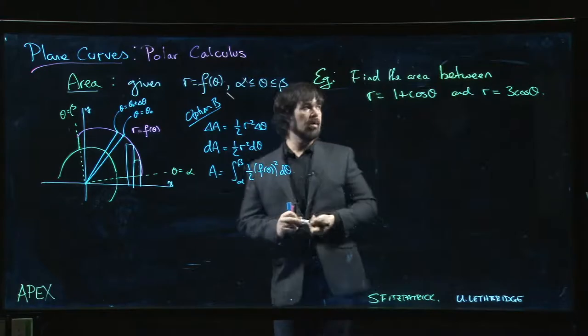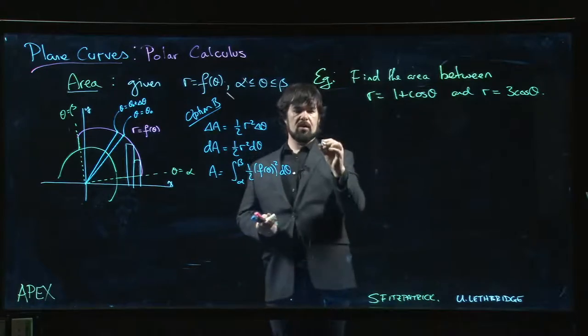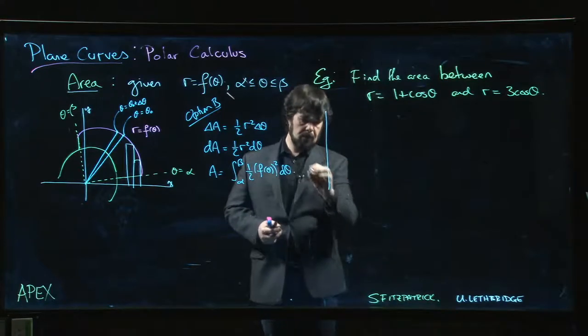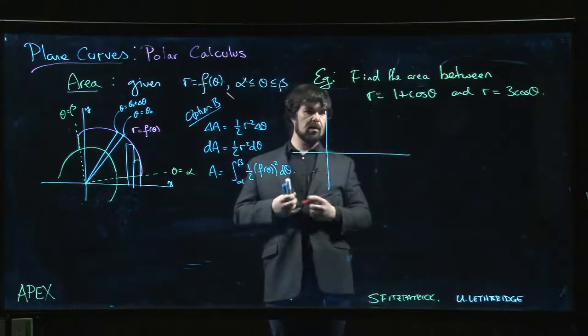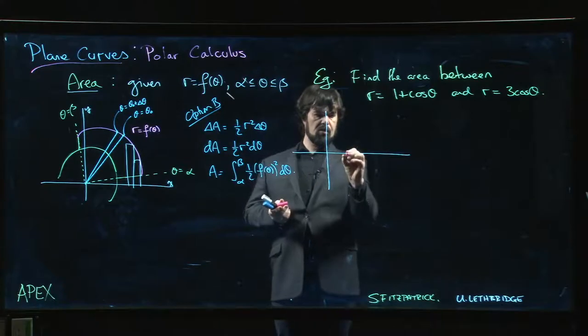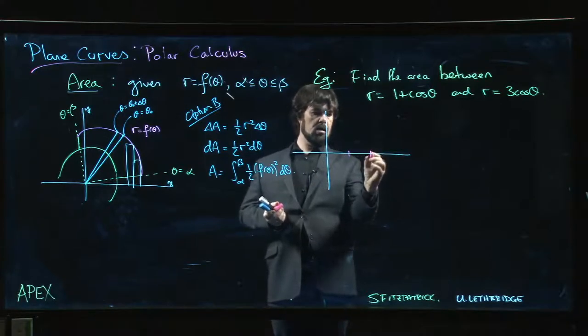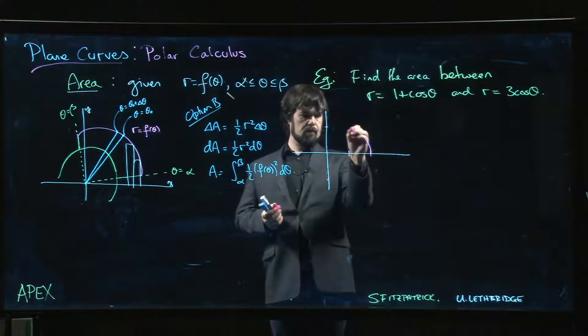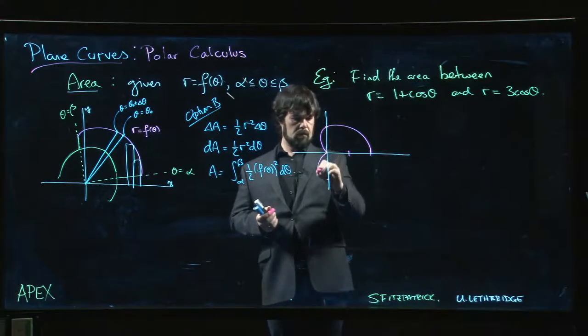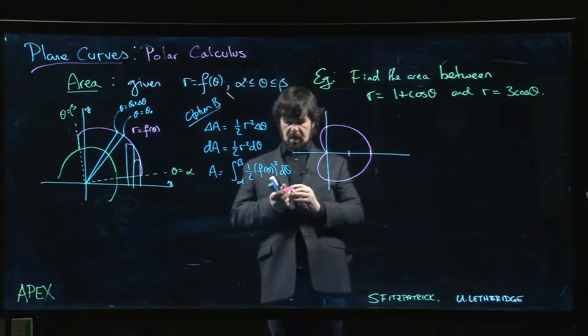So we don't want to go in blindly. We want to know what these two curves look like. The first one is that same cardioid that we dealt with in the previous example. So at one, two, I want to get the units right this time. We get something like that.